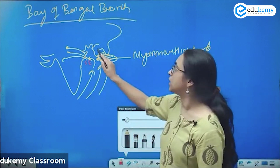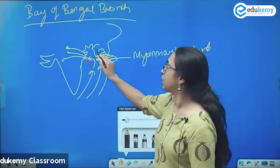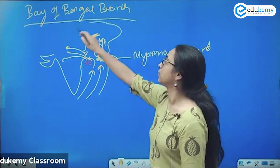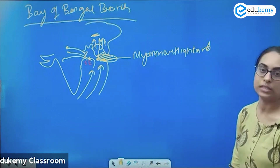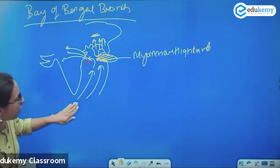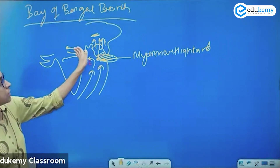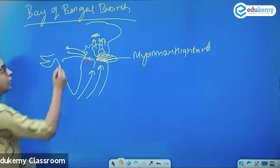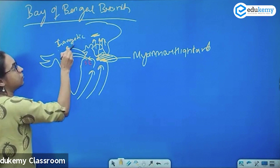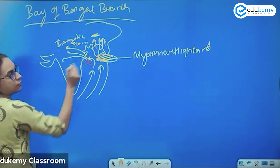One portion of the Bay of Bengal branch enters India from the north-eastern direction via the Meghalayan plateau. The branch that is deflected by Myanmar highlands enters the Gangetic plain from the south-eastern direction and reaches as far as the Himalayas.